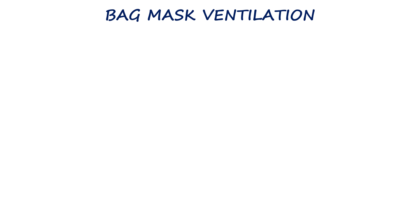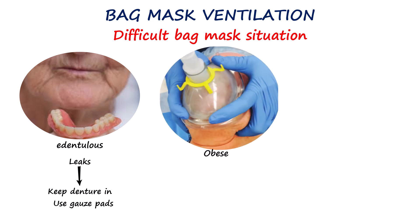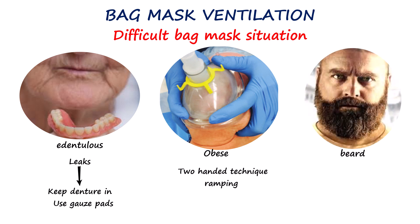In adults, certain situations make achieving a seal more difficult. In edentulous patients, the absence of teeth leads to collapsed lips and cheeks, producing leaks; leaving dentures in place when possible or packing the cheeks with gauze restores contour and improves the seal. In obese patients or those with redundant soft tissues, extra jaw thrust and the two-hand technique are usually required. Beards may also interfere with the seal, which can be improved by applying water-soluble gel to the mask rim or shaving the area when feasible.